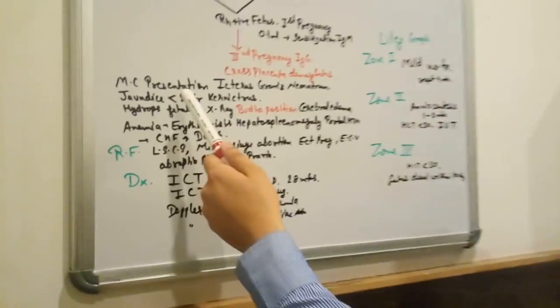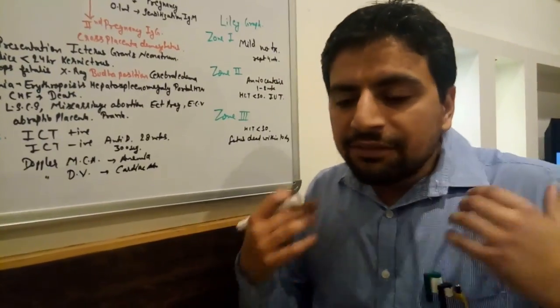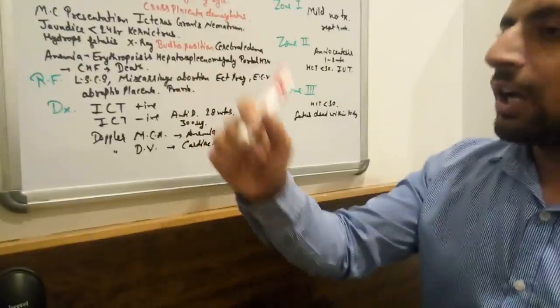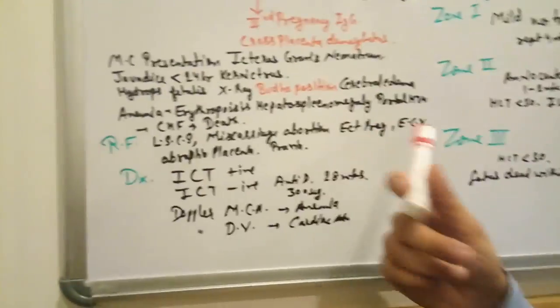The most common presentation is icterus gravis neonatorum. How do we identify in a fetus? If jaundice occurs less than 24 hours after birth and bilirubin level is more than 20, hydrops fetalis symptoms appear.